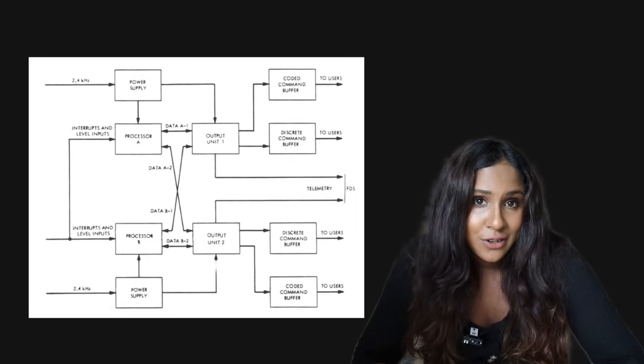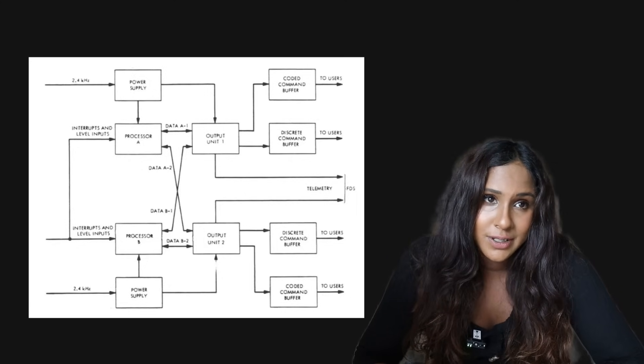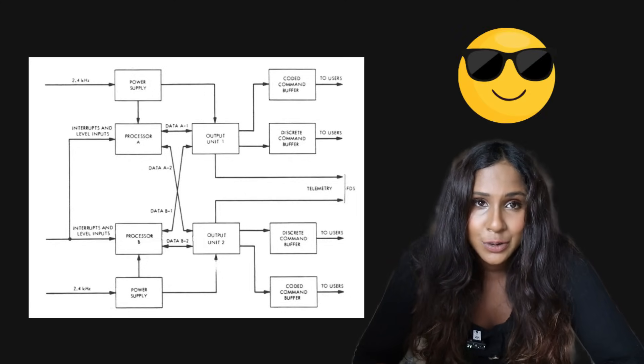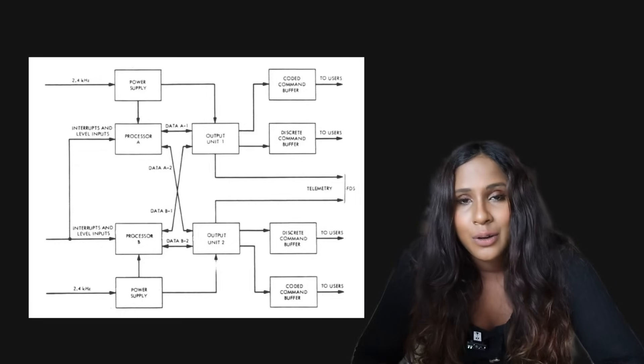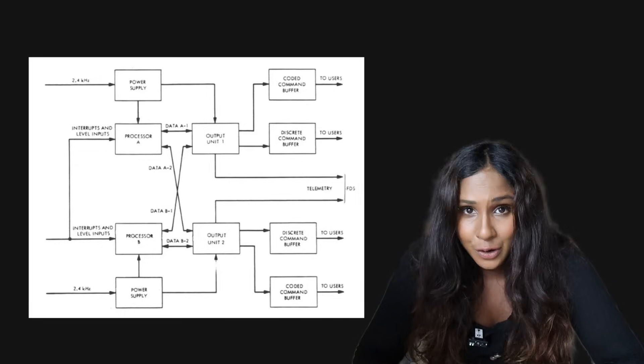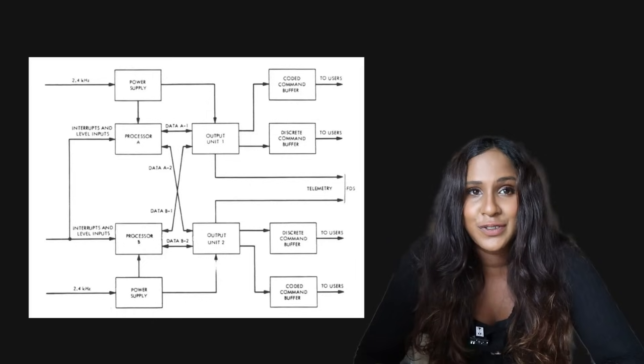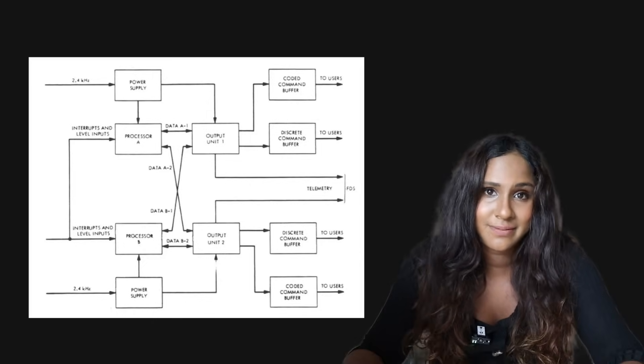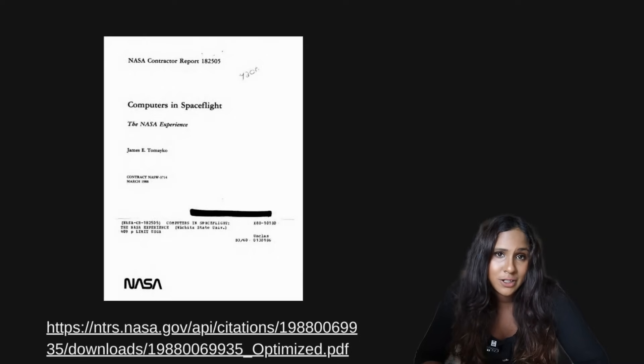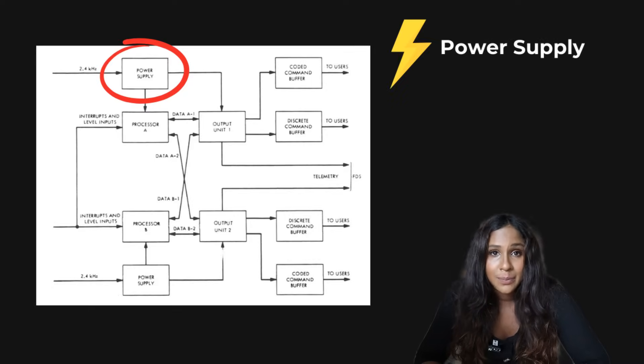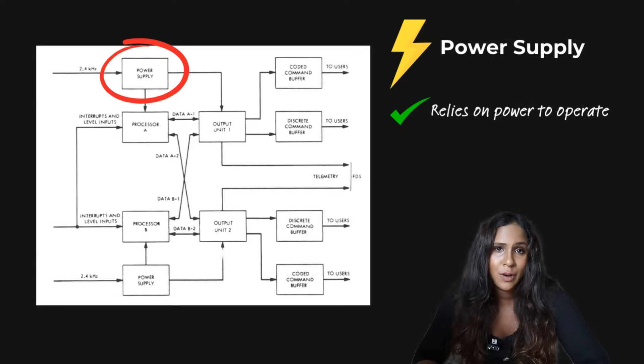So let's have a look at the actual diagram of the Voyager computer command system, because it's pretty cool to understand how a computer system for a spacecraft that's been drifting through space since 1977 works. I mean, look, we're all nerds. Let's just accept it. So this is the diagram, which is published in the journal link below. You get the power supply.